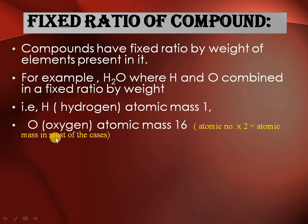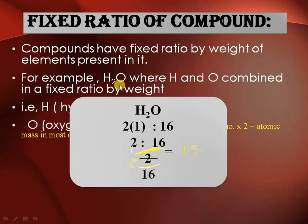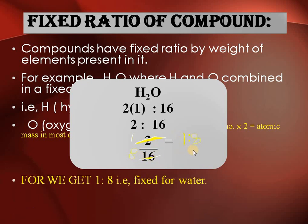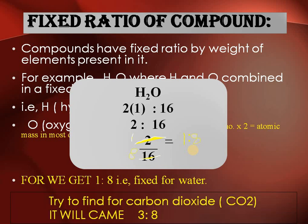For H₂O: oxygen has mass 16, and we have two hydrogens so their mass is 2. The ratio is 2:16, which simplifies to 1:8. So for water the fixed ratio by weight is 1:8 for hydrogen to oxygen. By this method, try to find the ratio for carbon dioxide CO₂ — that ratio comes out to 3:8.